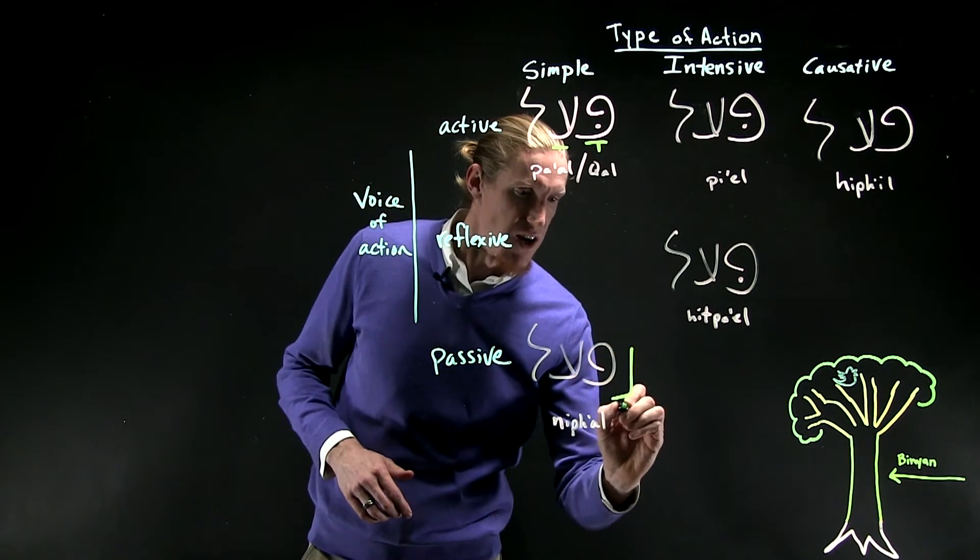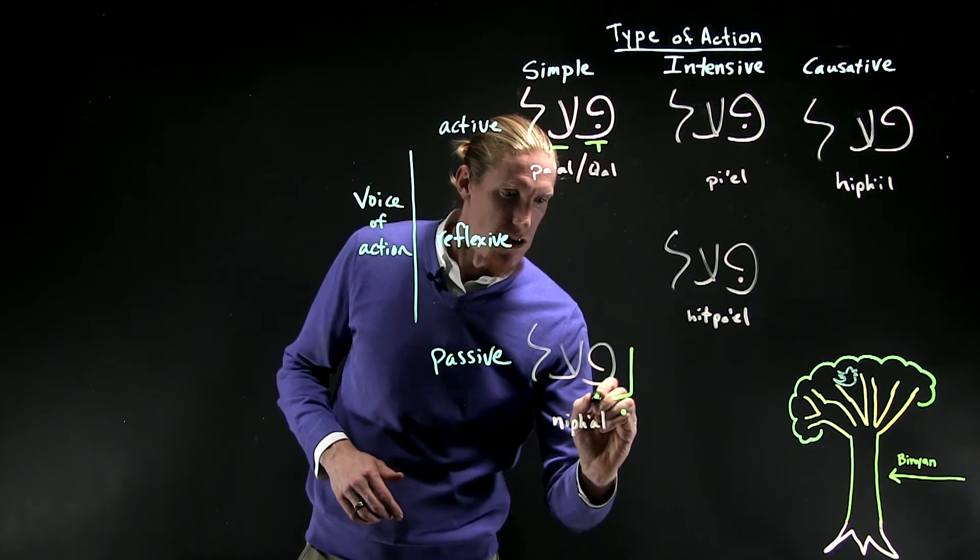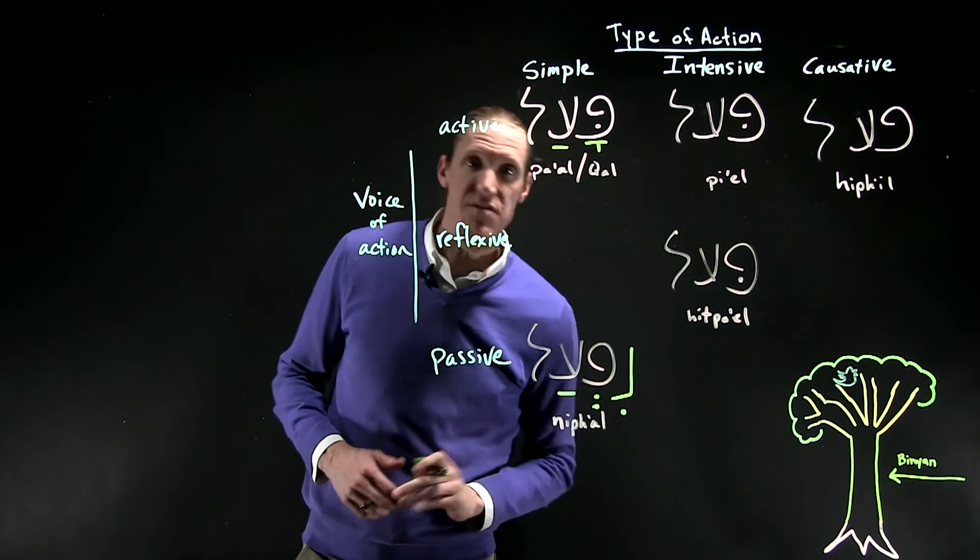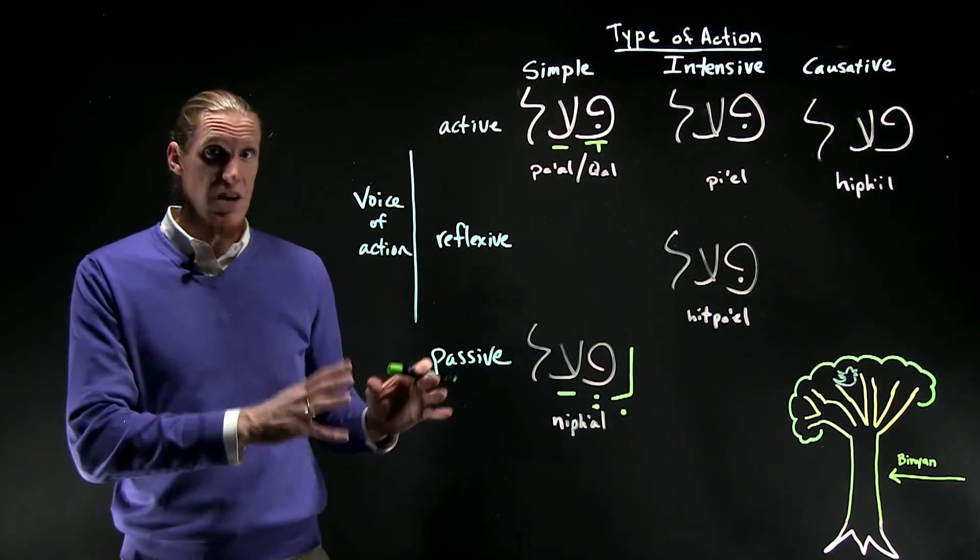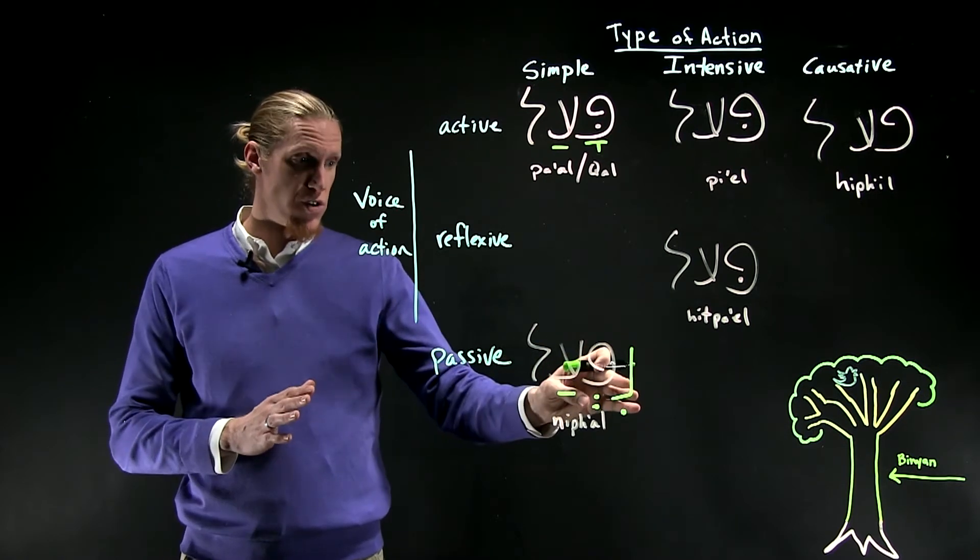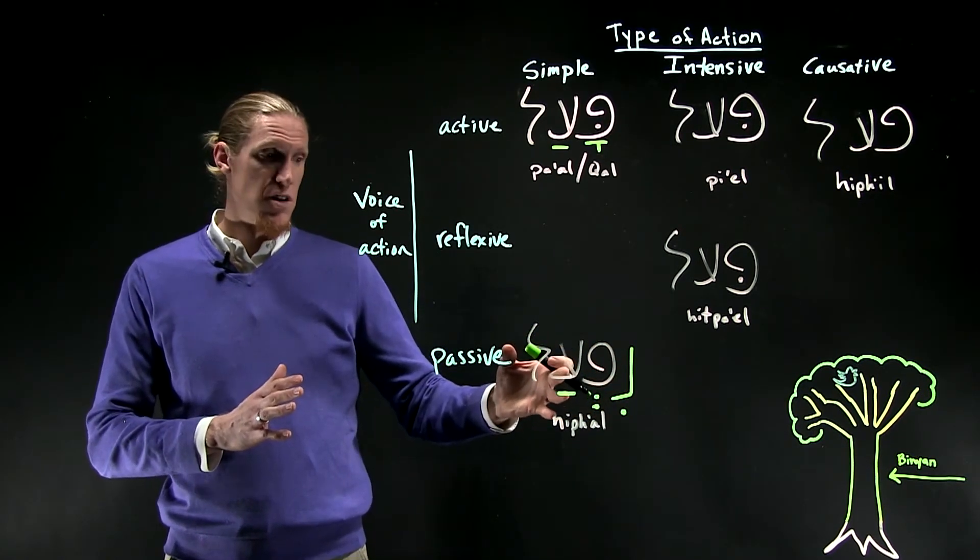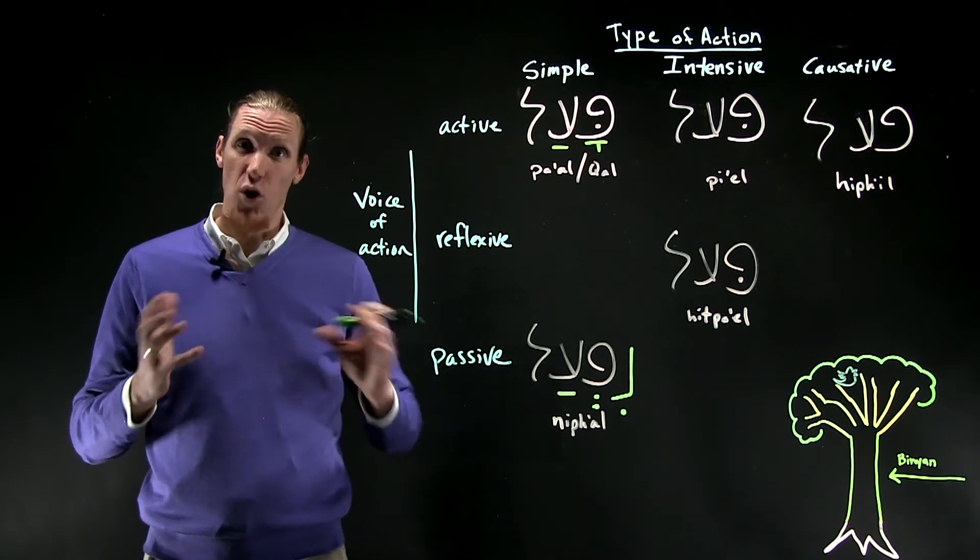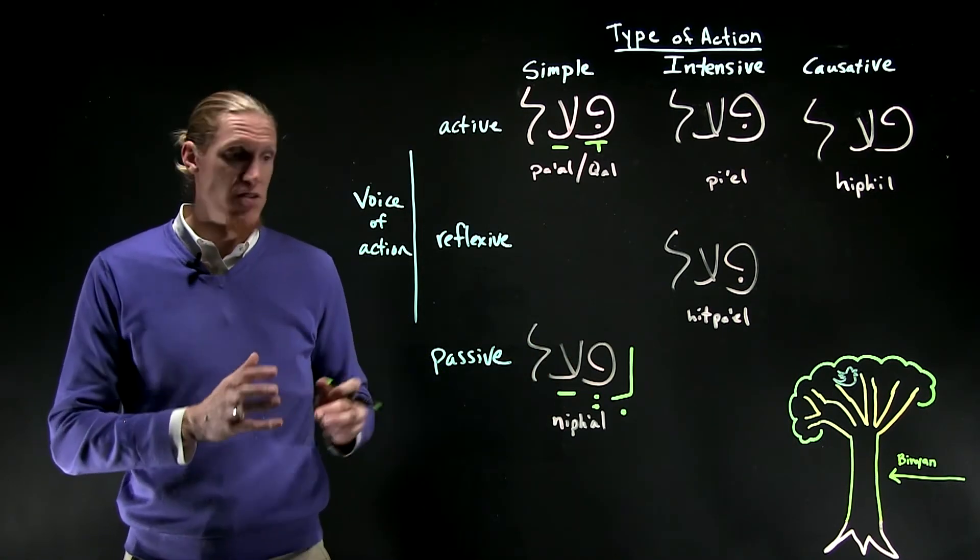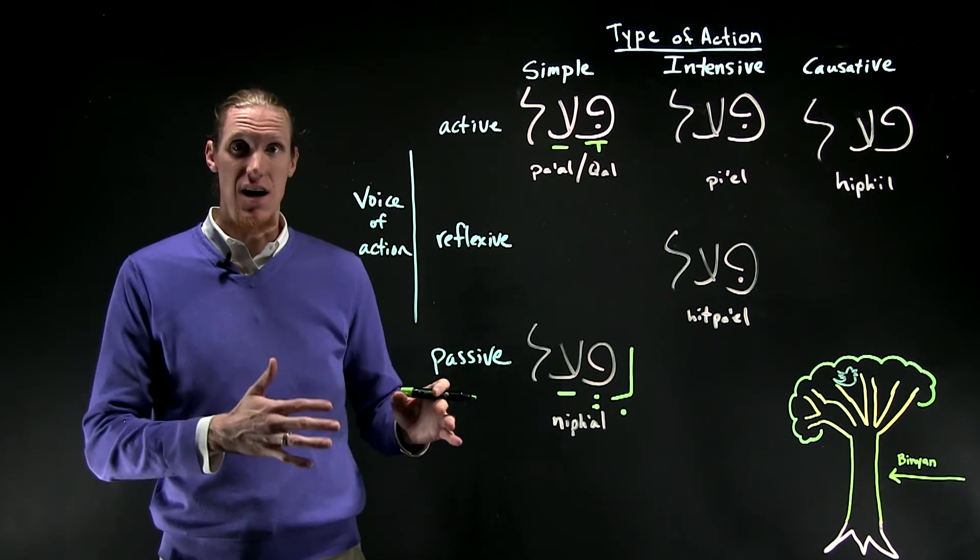Next one is the nif'al. Nif'al. So the visual sign of the nif'al is a nun followed by a hirik on the beginning of the root. The vocal sign or the vocal pattern is ni-ah. Ni-ah.